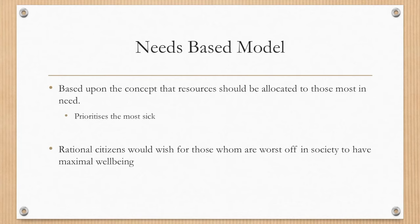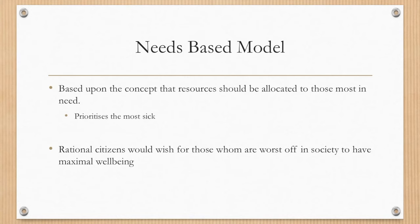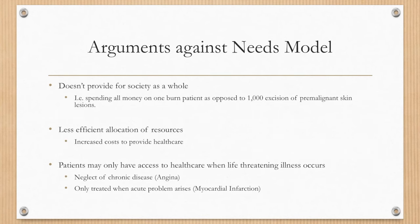The second method of resource allocation is the needs-based model. It's based on the concept that resources should be allocated to those patients who are most in need — i.e., it prioritizes the most sick. So the elderly patient with the significant burn injury should justify having treatment, and that young child with a significant medical condition shortening his life should still be treated because he is in need. In reality, rational citizens would wish for those who are worst off in society to have the maximal well-being. In principle this is a great idea, but we don't have infinite resources and it doesn't always provide for society as a whole.